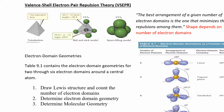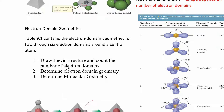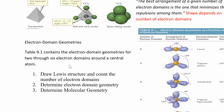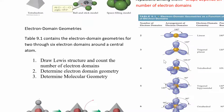The shape really depends on the number of electron domains, so it's important to count them correctly. To find the molecular geometry, the steps are: first, draw the Lewis dot structure; second, count the number of electron domains; third, determine the electron domain geometry; and fourth, determine the molecular geometry. You already know how to do step one, and we just learned how to count electron domains.